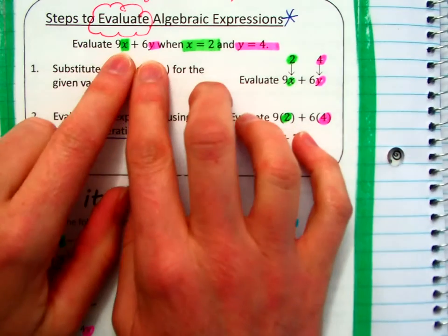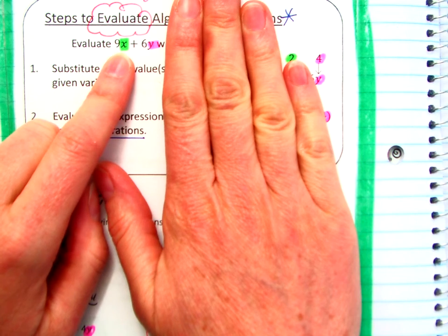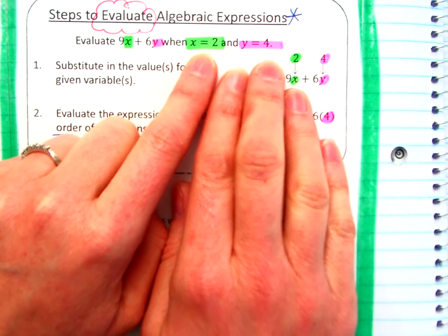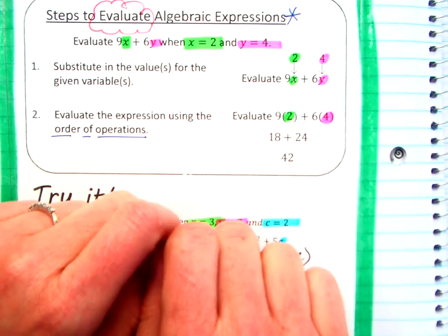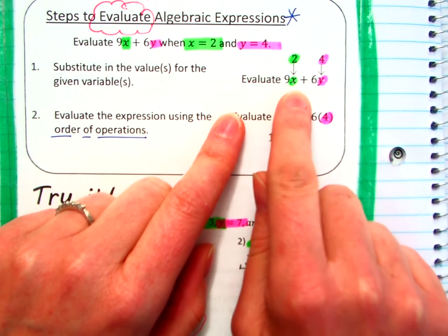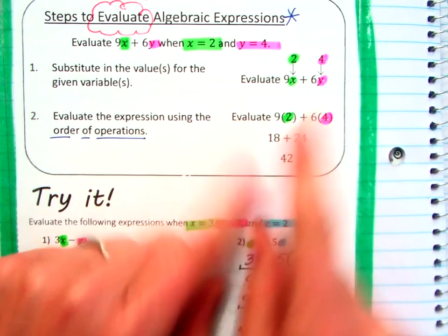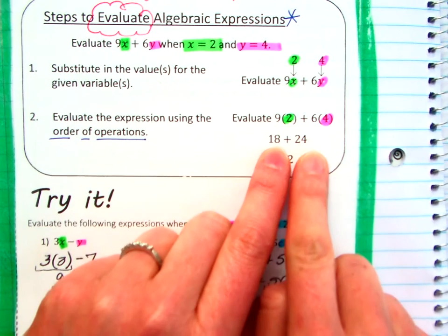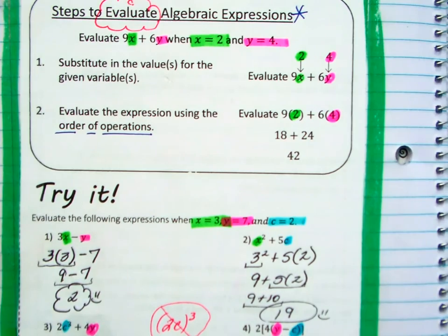If you have an expression such as 9x plus 6y, currently, without substitution values, you would be unable to evaluate that expression. But they tell us what x is, and they tell us what y is. So we just put them in the expression and follow the order of operations. So if x is worth 2, now it's 9 times 2. If y is worth 4, now it's 6 times 4. As you can see, they substituted the values of the variables. They rewrote the expression. They used the order of operations to multiply first, and then they added.